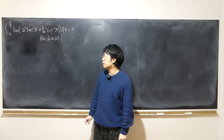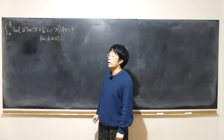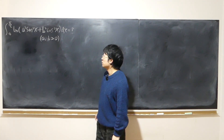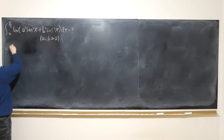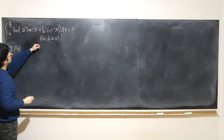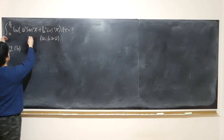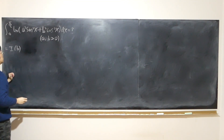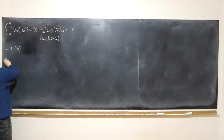We have a definite integral from 0 to π/2 of log(a²sin²x + b²cos²x) dx, where a and b are both positive. This is a function in terms of b, denoted as I(b). b as an input will perhaps change the value of the output — the output is the integral. So first, we will calculate the derivative in terms of b, I'(b).